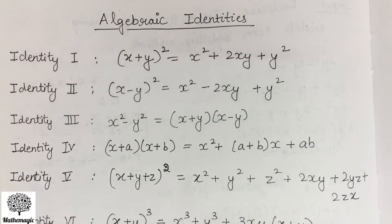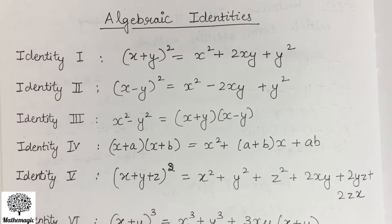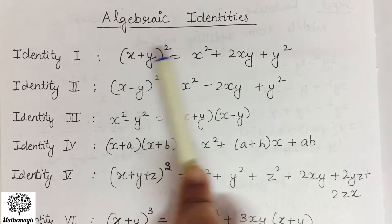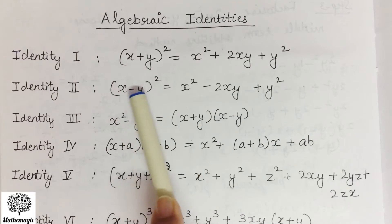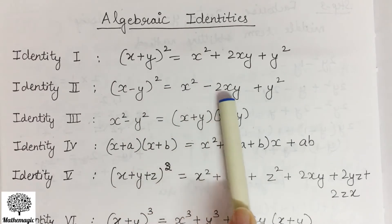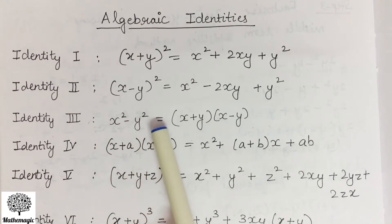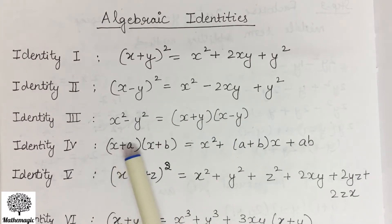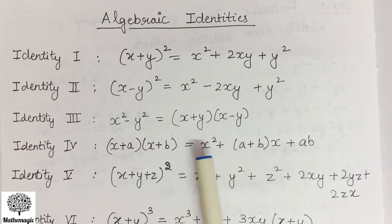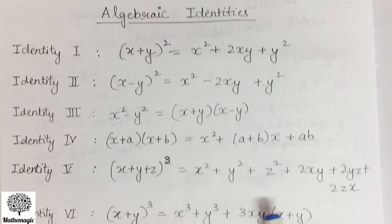In today's video we will be starting with Exercise 2.5, but before starting the exercise I would like to revise all the algebraic identities. The first one is (x+y)² = x² + 2xy + y². Similarly, (x-y)² = x² - 2xy + y². Third identity: x² - y² = (x+y)(x-y). Fourth: (x+a)(x+b) = x² + (a+b)x + ab.